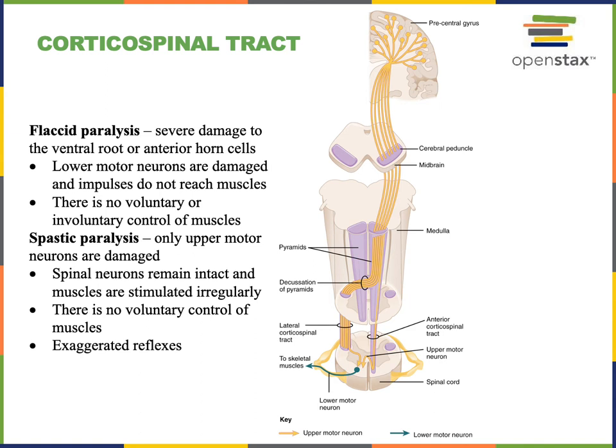The upper motor neurons form synapses with lower motor neurons in the spinal cord within the anterior gray horn, also known as the ventral horn of the spinal cord. These axons travel down through the corticospinal tract of the spinal cord before forming that synapse in the anterior gray horn.